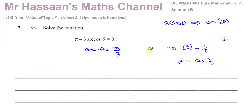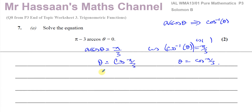What you're really doing mathematically is taking the cosine of both sides. The cosine and the inverse cosine cancel each other out, leaving you with θ equals cosine of π over 3. We know that cosine of π over 3, which is 60 degrees in radians, equals one half. You can put that in your calculator and confirm - in radian mode, cosine of π over 3 gives you a half. So there's the answer to part A - a very simple, short question.